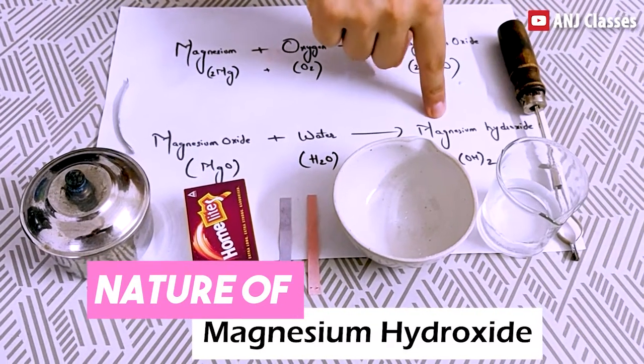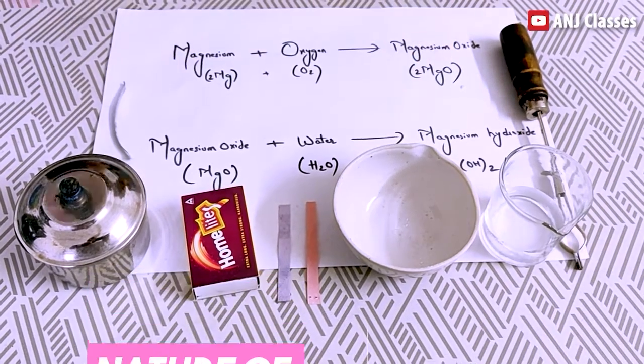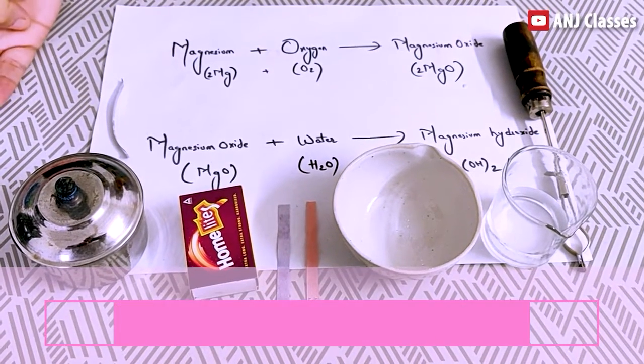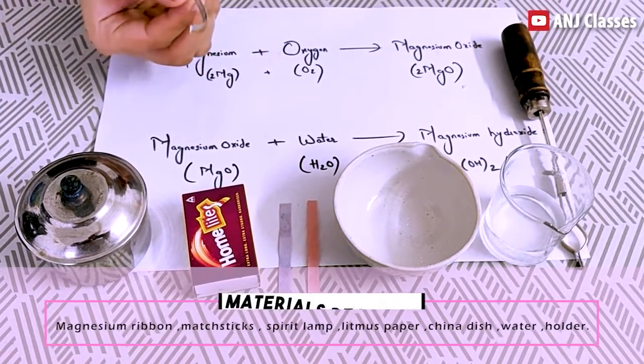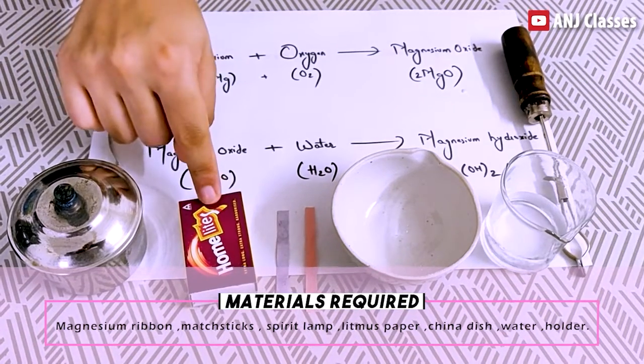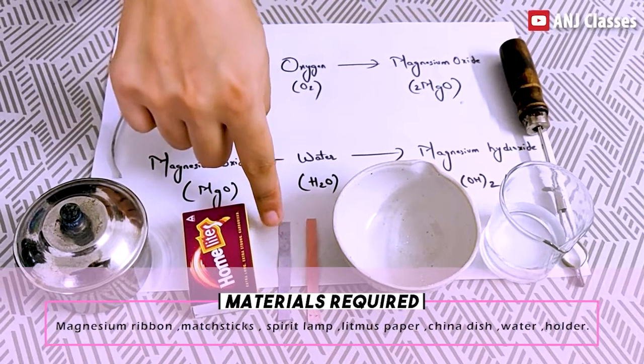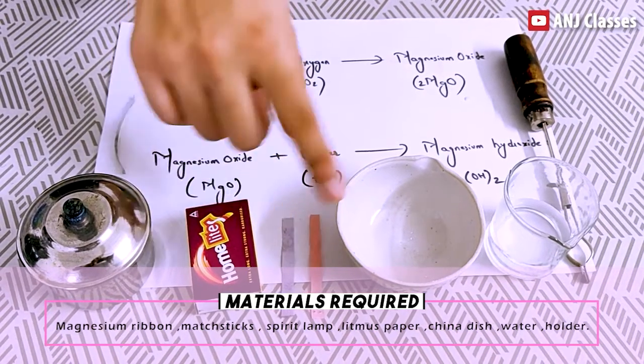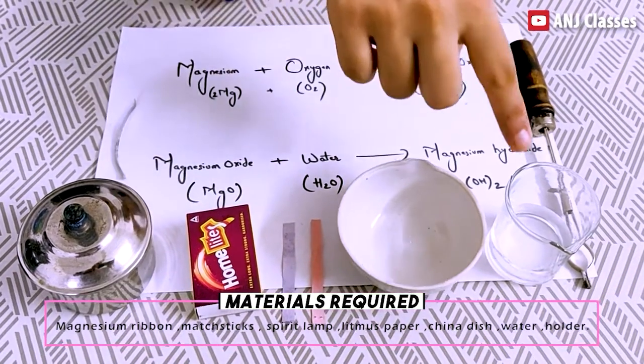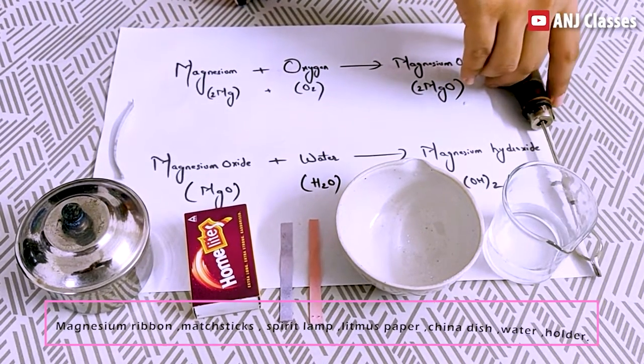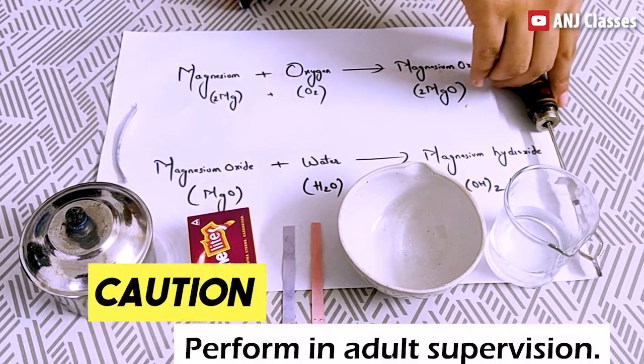Material required for this activity: a small piece of magnesium ribbon, matchstick, spirit lamp, litmus paper red and blue, china dish, water, and a test tube holder. As I don't have pair of tongs, I will be using test tube holder.